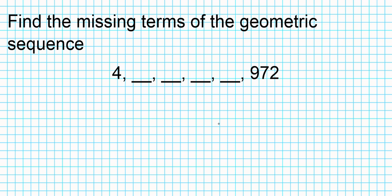For the first question, we are to find the missing terms of the geometric sequence given below. I'm going to set up the problem in two different ways, and then proceed to solve for the common ratio that can enable us to find the missing terms. Let's focus on the setup of the equation that enables us to find R.